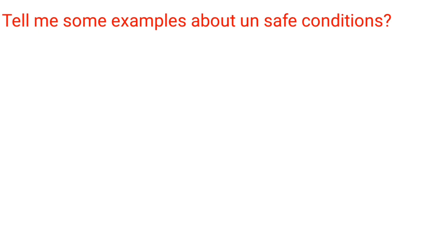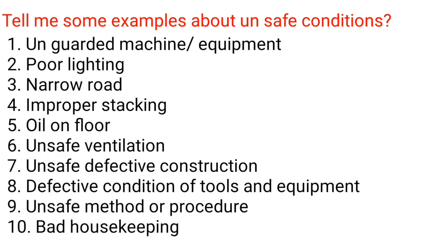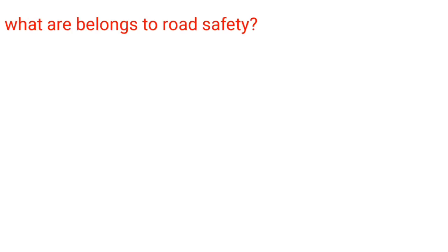Examples of unsafe conditions: 1. Unguarded machinery or equipment. 2. Poor lighting. 3. Narrow roads. 4. Improper stacking. 5. Oil on floor. 6. Unsafe ventilation. 7. Unsafe or defective construction. 8. Defective condition of tools and equipment. 9. Unsafe method or procedure. 10. Bad housekeeping.